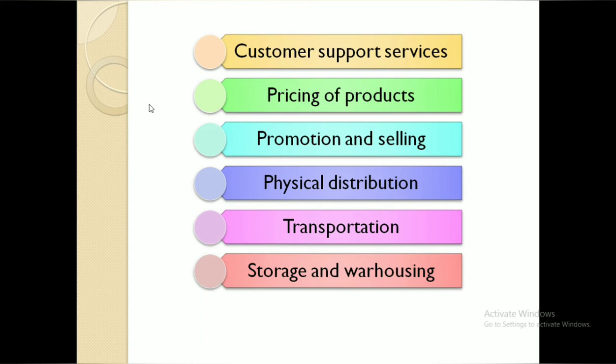We choose which type of distribution channels to use, maintain our inventory, and store it in warehouses. Then there is transportation — goods manufactured in one place need to reach consumers elsewhere. For example, Darjeeling tea is manufactured in Assam but consumed all over the world. Through transportation, goods move from the place of manufacturing to the place of consumption, creating place utility.